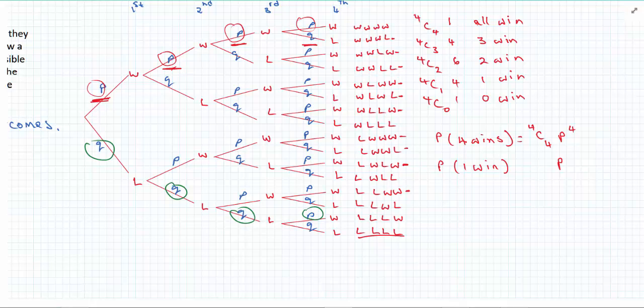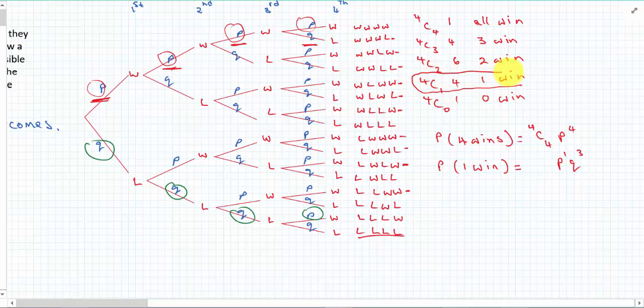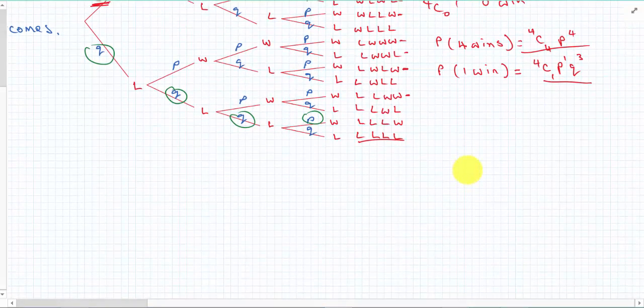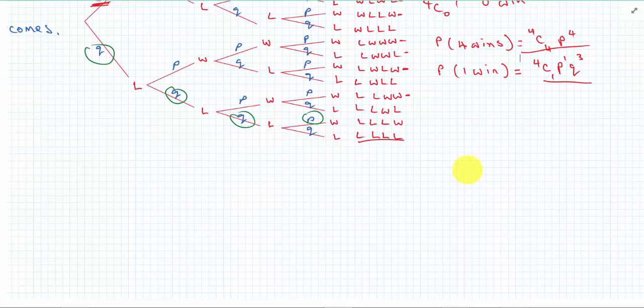What if the question asks for probability of one win? Well, probability of one win would be a loss, another loss, another loss, and a single win. We just want to know the probability of winning exactly one. It doesn't matter where that win happens. So that would be one p, p to the one. The other one we had three q's, so that's q cubed, and that's going to happen four choose one times.